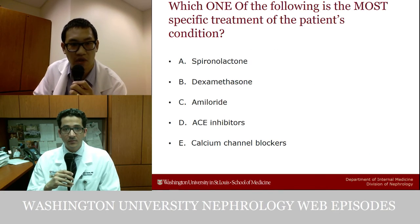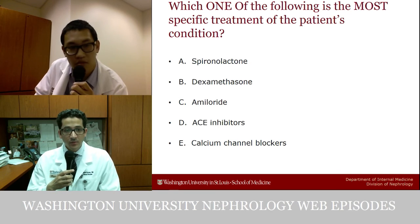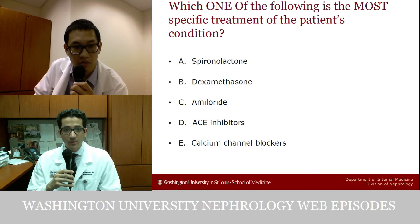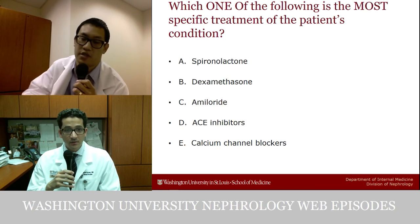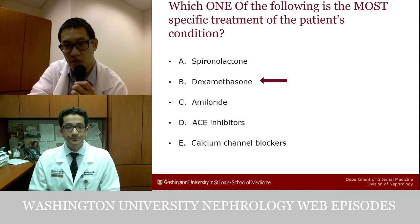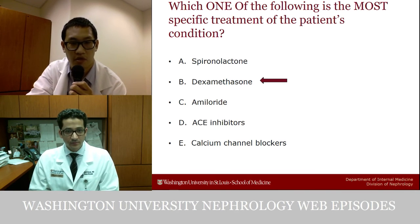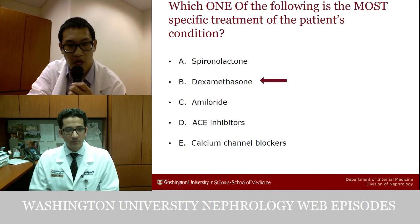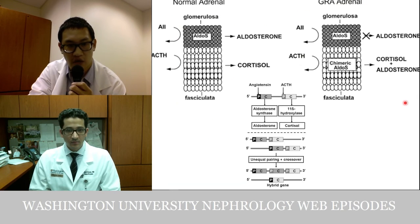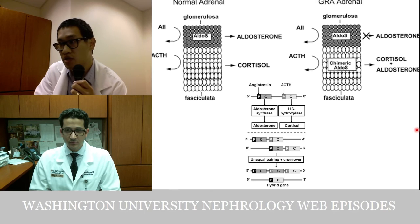With that diagnosis, the question becomes: which is the most specific treatment? Options include spironolactone, dexamethasone, amiloride, ACE inhibitors, or calcium channel blockers. All of the first three can be used, but the most specific treatment is to suppress ACTH, which is achieved with dexamethasone — and that's the whole reason this is called glucocorticoid remediable aldosteronism: giving steroids makes the hyperaldosteronism go away.